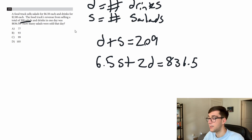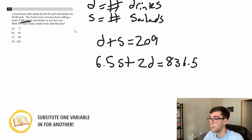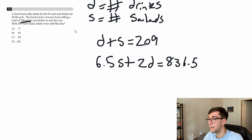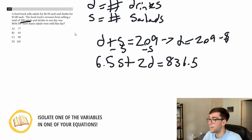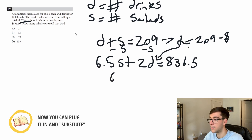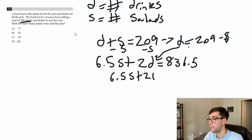With these two equations we need to isolate one variable. The d looks easier because it's attached to a 2, so I'm going to convert d into s. From the amount equation, subtract s from both sides and we get d equals 209 minus s. Over in the price equation we can plug this in: 6.5s plus 2 times (209 minus s) equals 836.5.